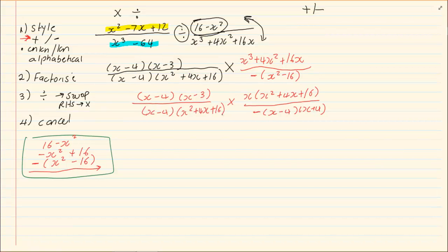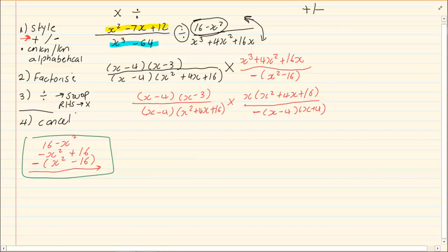Now, where it is all factorized, what we are going to try and do is we are going to try and cancel. You can cancel anything from the top with anything from the bottom provided they are exactly the same. So, here we can cancel x minus 4 with x minus 4. We can cancel x squared plus 4x plus 16 with the top x squared plus 4x plus 16.